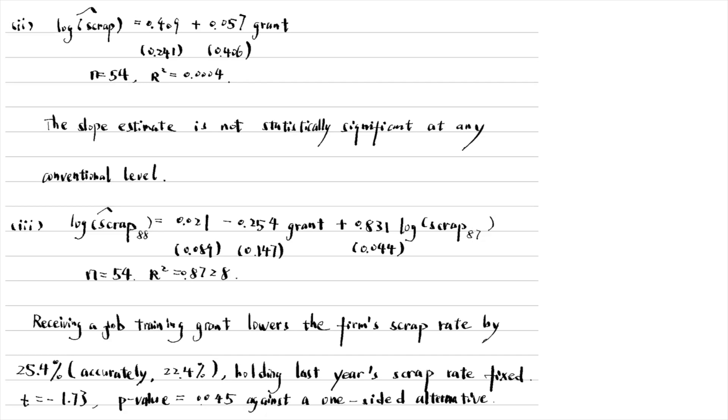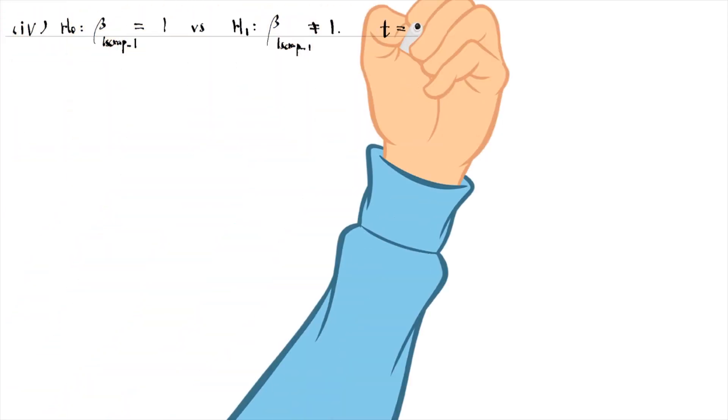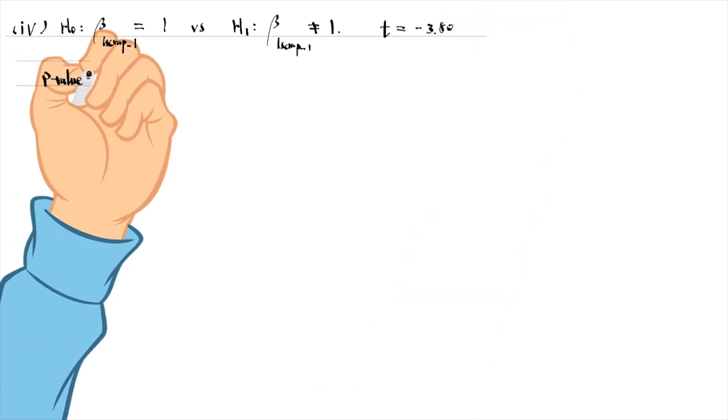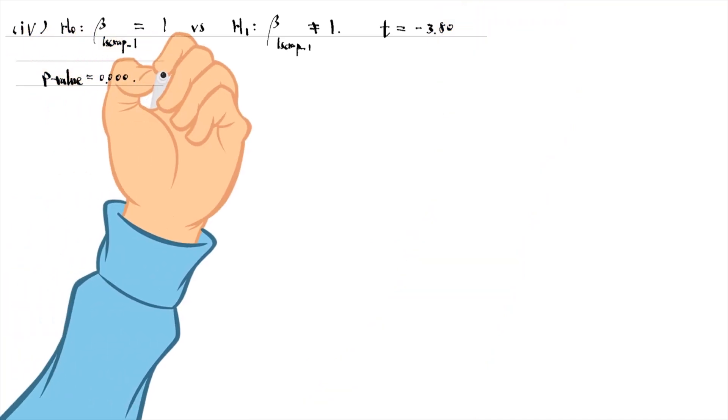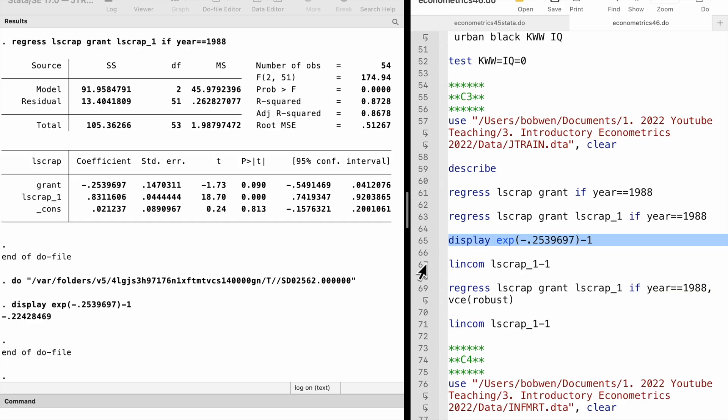For part 4, the T-statistic is minus 3.80, and its p-value is 0 to 3 decimal places. It is statistically significant at the 1% level, against a two-sided alternative. We reject the null hypothesis at the 1% significant level, against a two-sided alternative. We use the LINCOM command in STATA to do the T-test.